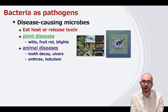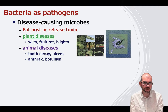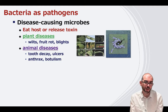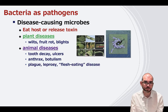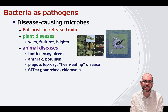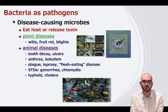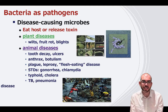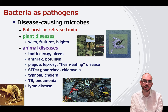Anthrax and botulism are two examples of bacteria that release toxins that make you sick. Botulism is famously the main ingredient in Botox — the botulism toxin causes paralysis, so it's injected into people's faces to make wrinkles seem less prominent. There's also plague, leprosy, flesh-eating disease, many STIs such as gonorrhea and chlamydia, typhoid and cholera from untreated waterways, and TB, pneumonia, and Lyme disease — all caused by bacteria.